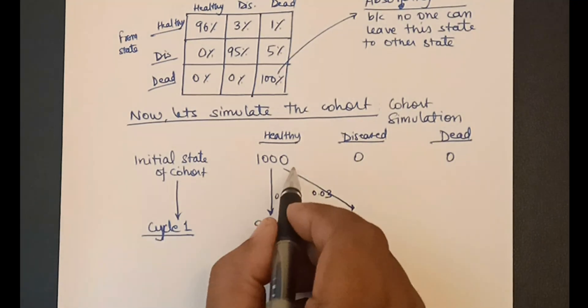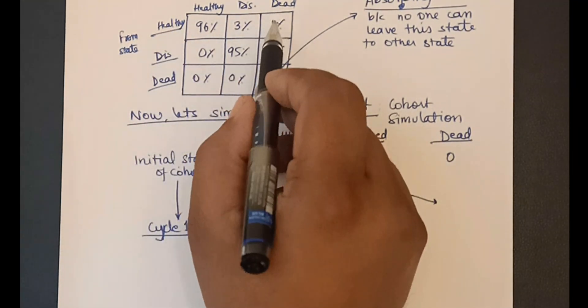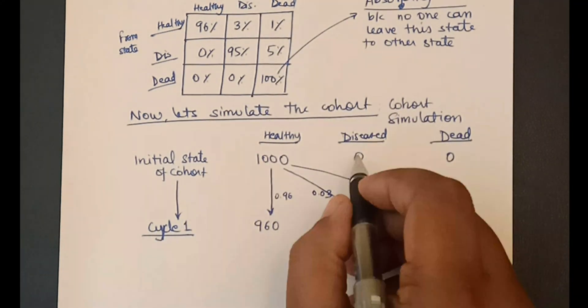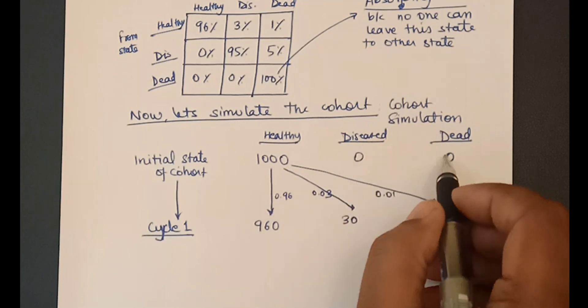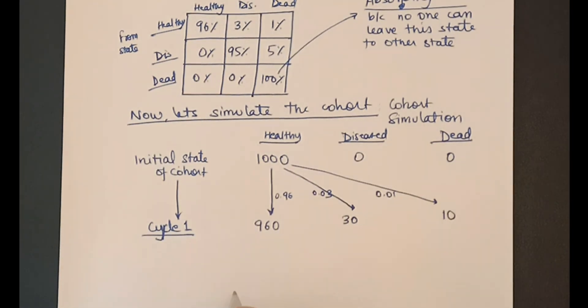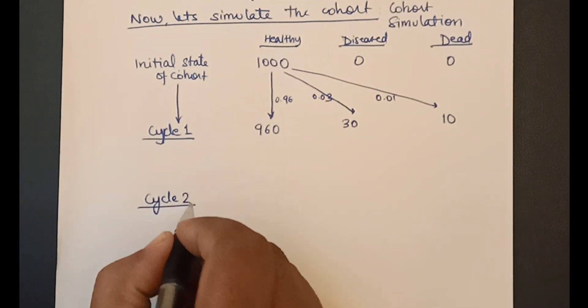Similarly, probability of going from healthy to dead is 0.01. So 1000 multiplied by 0.01 gives us 10. Since other states have 0 people, they can't contribute to the new state. Our cycle 1 of simulation is complete. Cycle 1 was relatively simple because we had 0 diseased and 0 dead.